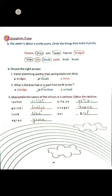Next we will see exercise B — choose the right answer. Here we have to choose the right answer. Number one: name some things prettier than sailing boats and ships. Which is prettier than sailing boats and ships? So the answer is B — clouds. Clouds are prettier than sailing boats and ships.